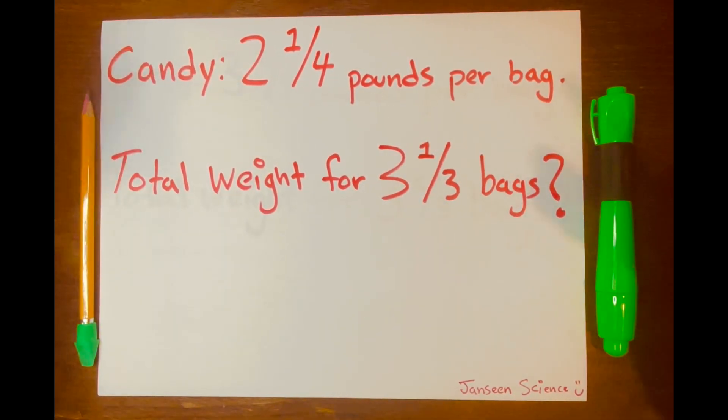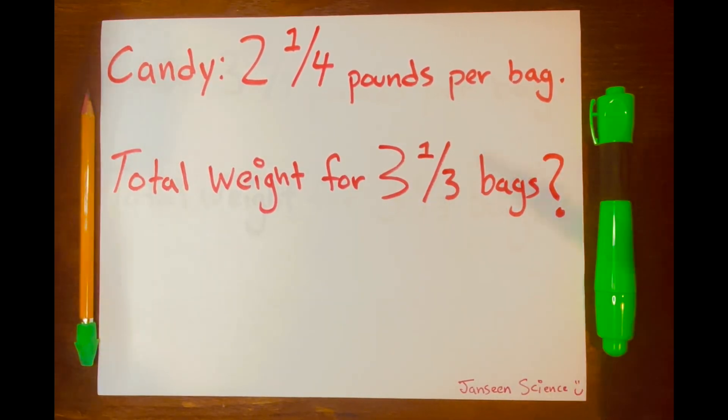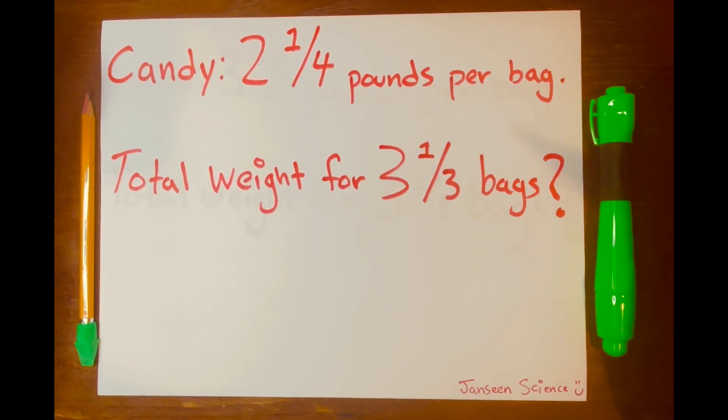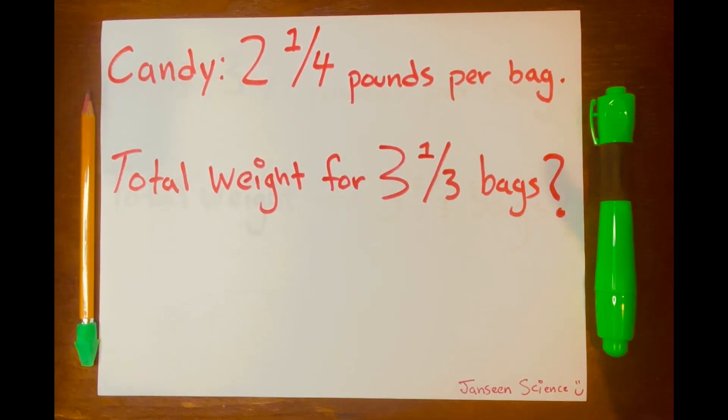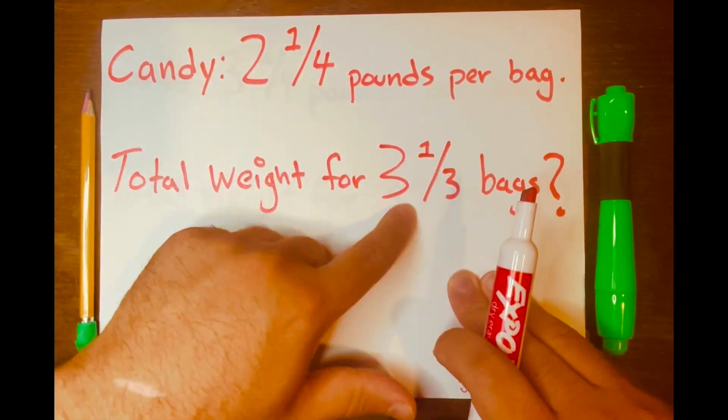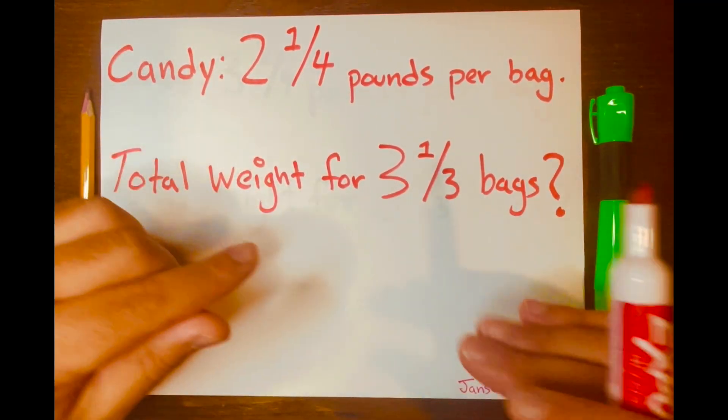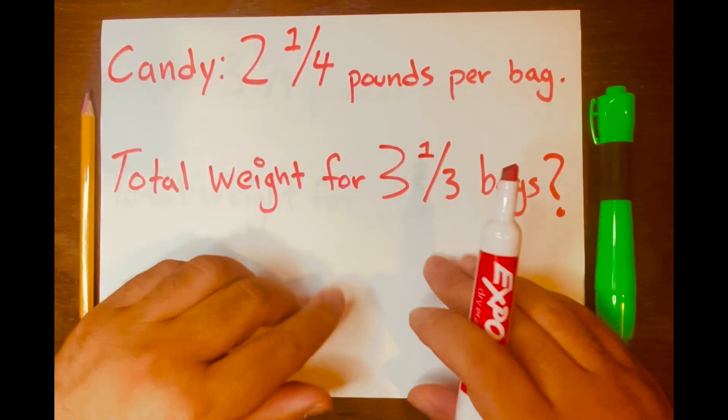It's like if you have two pounds of candy per bag and you have six bags, the total weight is 12 pounds. All you did was multiply two times six bags, which equals 12. So 12 pounds of candy you have. Same thing here. We want to multiply these two mixed numbers. And to make the math easy, we want to convert these mixed numbers into improper fractions. So let's go ahead and do that.